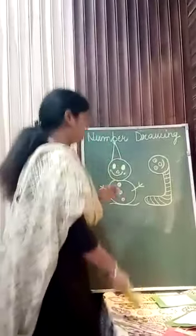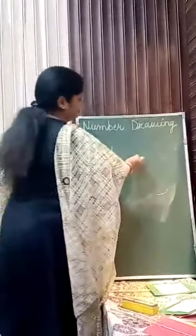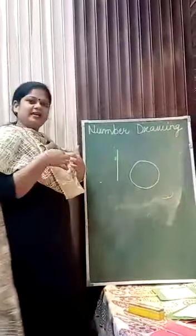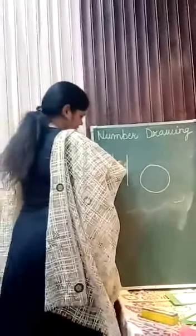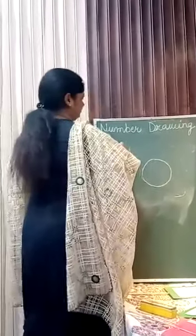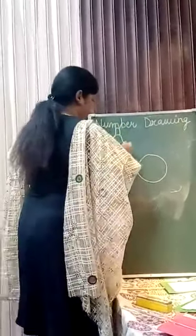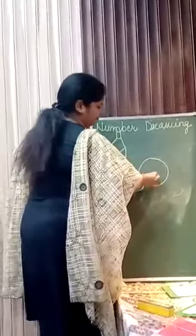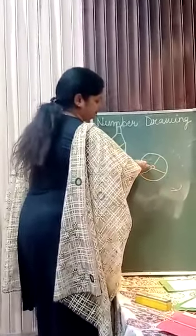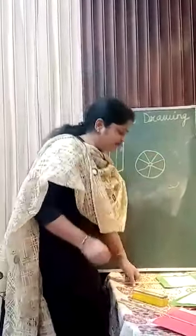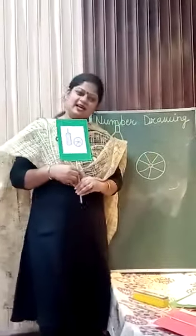Now very interesting thing with number 10. Number 10 — zero. First we will make it from 1, and then zero. This is a baseball. Good, natural and very very easy.